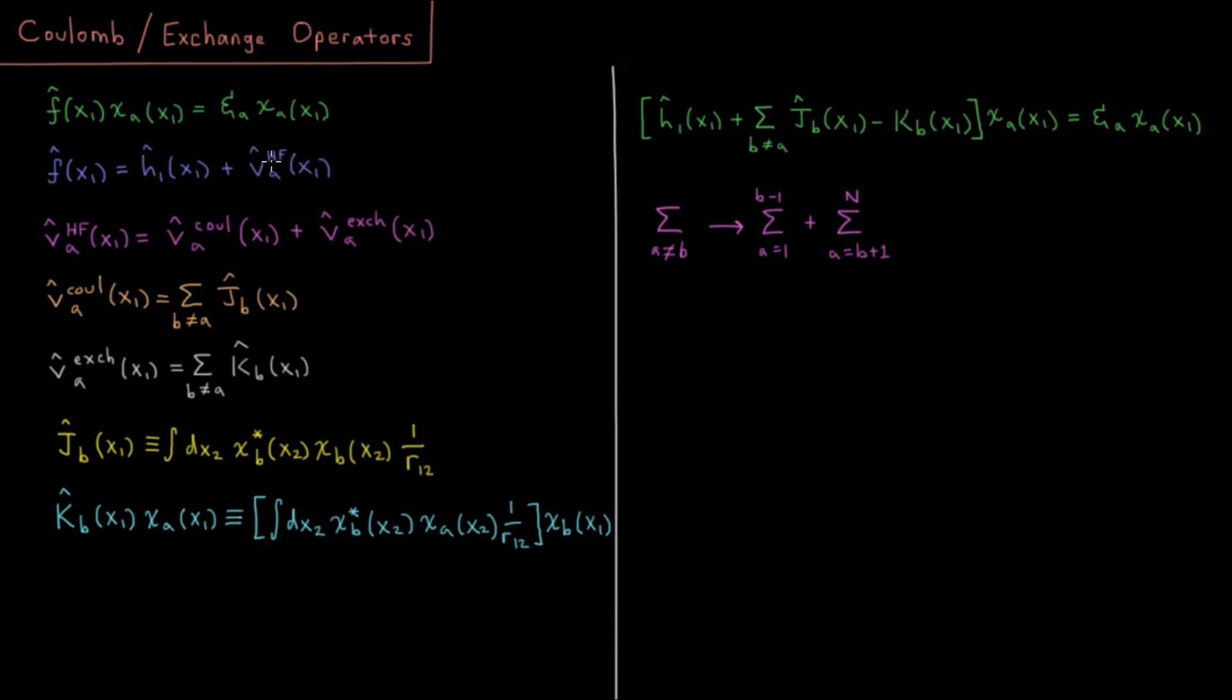And it does so through the average field or the charge density of all those other electrons through this operator here, this mean field operator. So we're going to split this mean field operator into two components: we're going to split it into a Coulomb operator and an exchange operator.